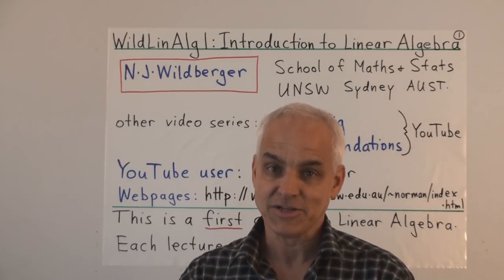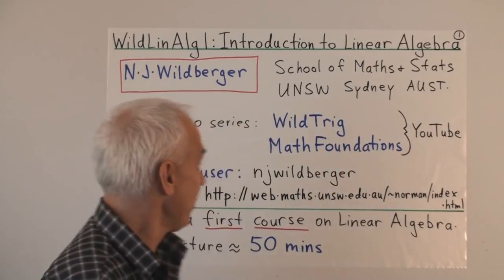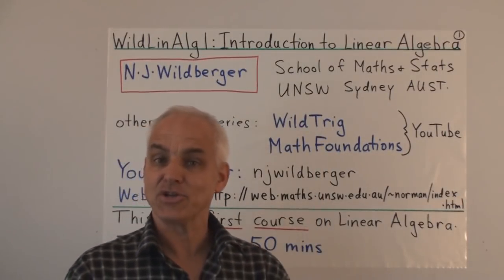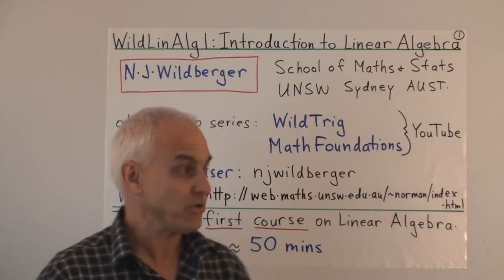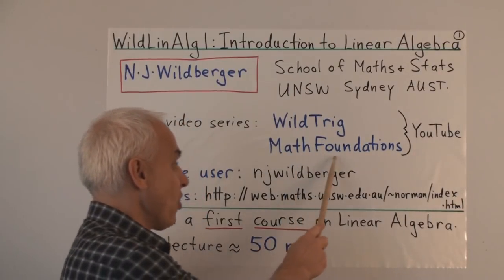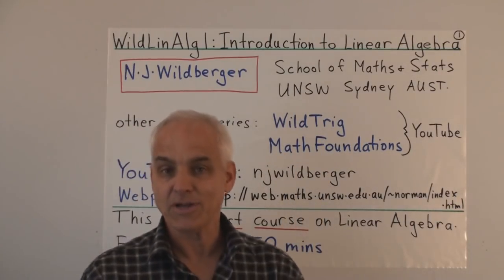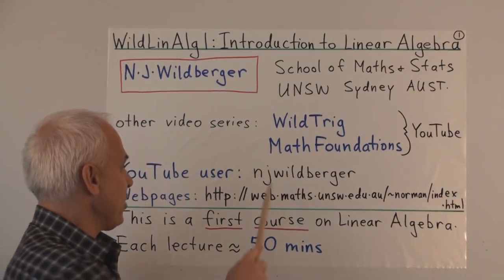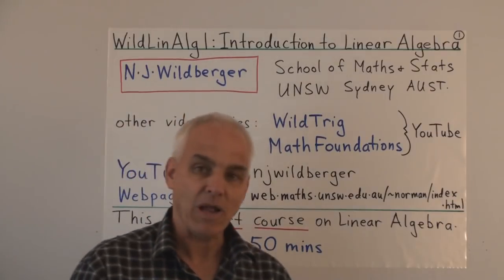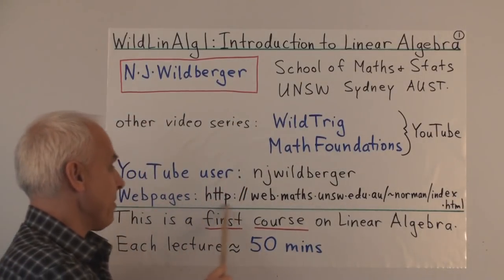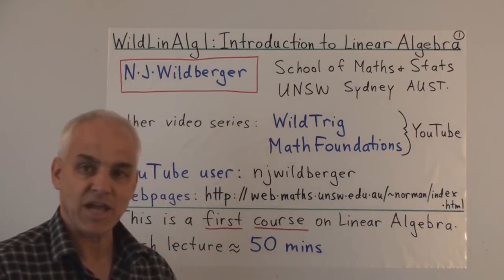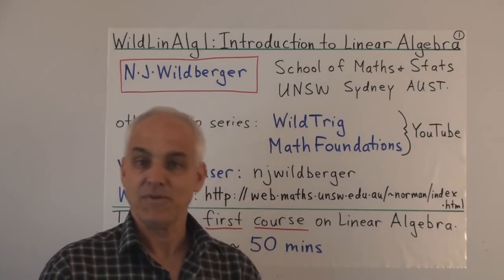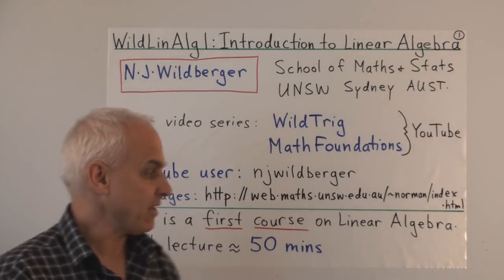I've posted a few other things online on YouTube: a series called Wild Trig, which deals with rational trigonometry and many aspects of geometry, and also another series called Math Foundations, where I talk about foundations of mathematics. My username on YouTube is NJ Wildberger, and here is my webpage at the University of New South Wales, where you can find additional papers, views, and perhaps some other interesting things.